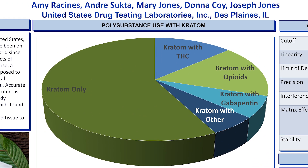Figure 1 shows the polysubstance use that we observed in all specimens reported out as containing either mitragynine or 7-hydroxymitragynine, from the time we launched the assay in March of 2021 through December of 2022. Not surprisingly, the most commonly used drugs found along with kratom were THC, gabapentin, and opioids. THC typically has our highest positivity rate, so it's not surprising that individuals using kratom would also be using THC. Kratom does have a lot of opioid-like properties, so it's also not surprising that an individual using kratom would be using gabapentin or opioids.